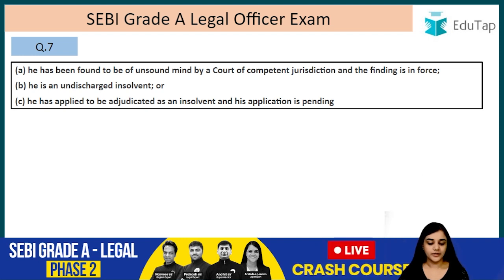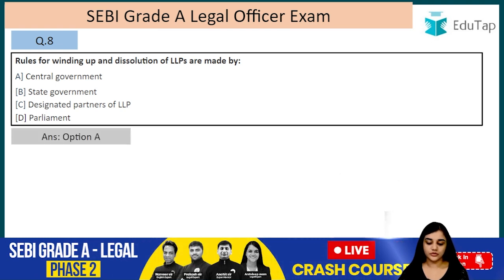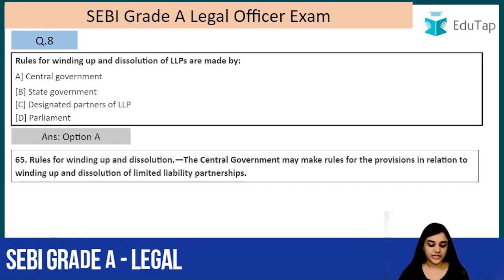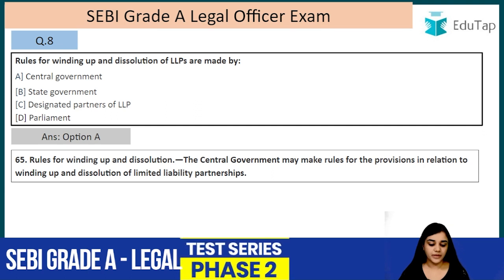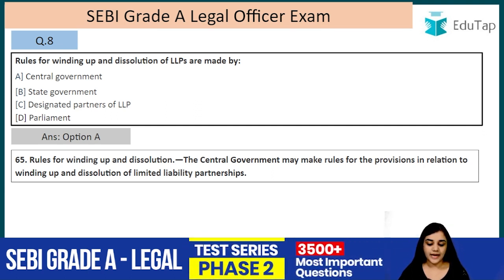Question number eight: rules for winding up and dissolution of LLP are made by whom? The answer is option A — the central government. The central government may make rules for provisions in relation to the winding up and dissolution of limited liability partnerships.